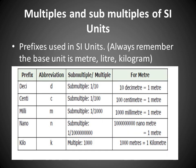Multiples and sub-multiples of SI units: The base units are meter, liter, and kilogram. Prefixes used include deci, centi, milli, nano, and kilo, with abbreviations d, c, m, n, and k. Sub-multiples: 1/10 (deci), 1/100 (centi), 1/1000 (milli), 1/10,000,000 (nano); multiple: 1000 (kilo). For meter: 10 decimeters = 1 meter, 100 centimeters = 1 meter, 1000 millimeters = 1 meter, 10 crore nanometers = 1 meter, 1000 meters = 1 kilometer.